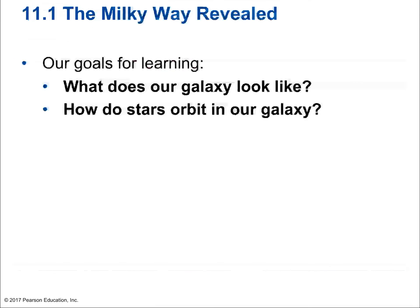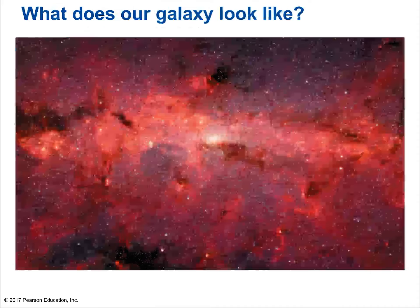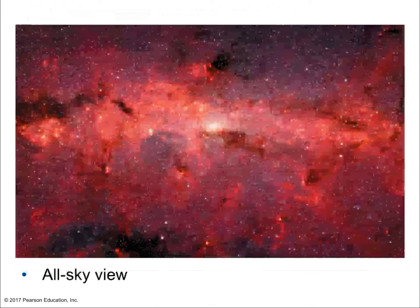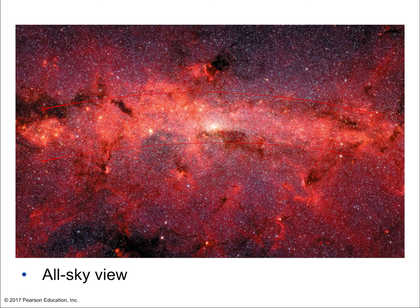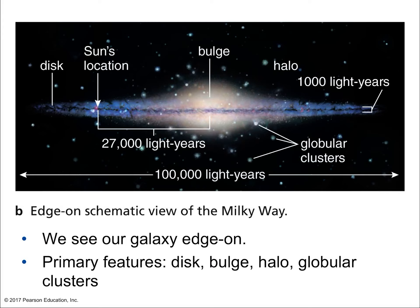What do we want to learn about the Milky Way? We want to learn what our galaxy looks like, where we are, what its structure is, and how stars orbit the galaxy — is it like how planets orbit the sun? Here is an all-sky view showing the band of light that represents looking into the disk of the Milky Way, including the center of the galaxy.